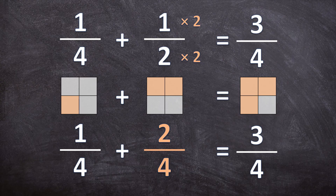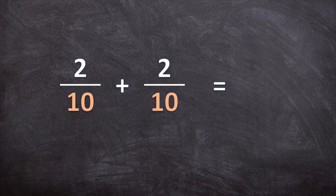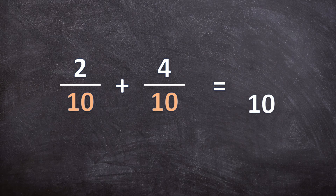Now let's do a few more examples. Here we have 2 over 10 plus 2 over 5, and remember we need to make the denominators the same. We can multiply 5 by 2 — 5 times 2 is 10 — but we also need to multiply the numerator by 2, and 2 times 2 is 4. Now that our denominators are the same we can add the numerators: the denominator in the answer is 10, and 2 plus 4 is 6.